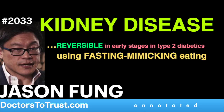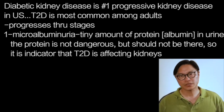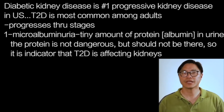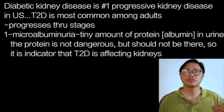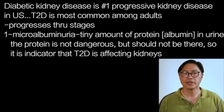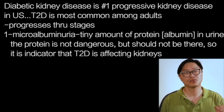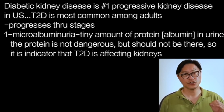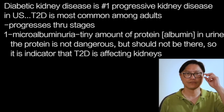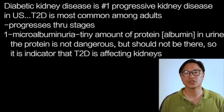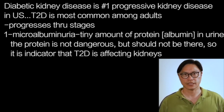Diabetic kidney disease is the most common form of progressive kidney disease in the United States. Most of diabetes is type 2 diabetes, which typically happens in adults, and it progresses through a very stereotyped number of stages. First, you develop a stage called microalbuminuria, where there are very minute quantities of protein — mostly albumin — that can be detected in the urine. The protein itself is not dangerous to the kidney, but it's not supposed to be there, and it's usually one of the first indications that the diabetes is starting to affect the kidneys.